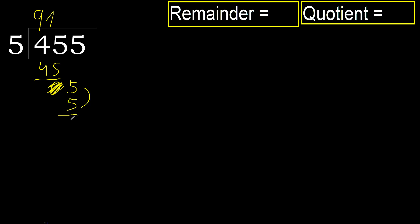5 minus 5 is 0. Next — that is not a number, therefore finish it.